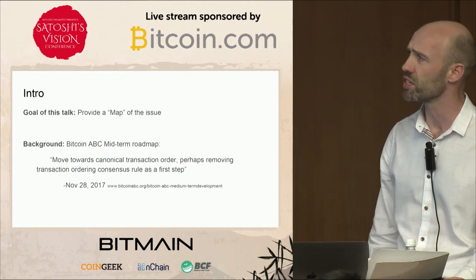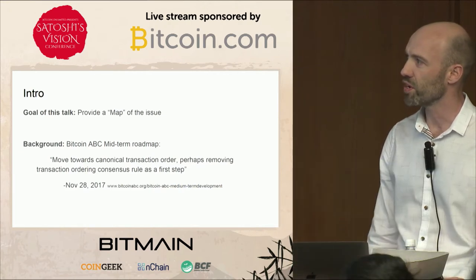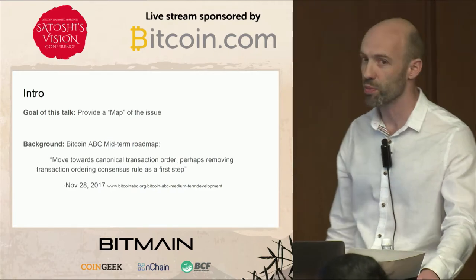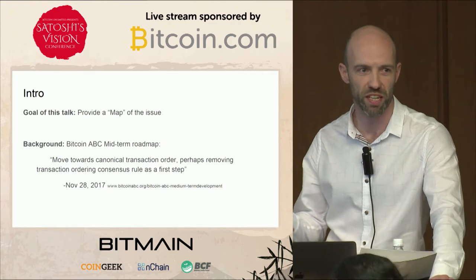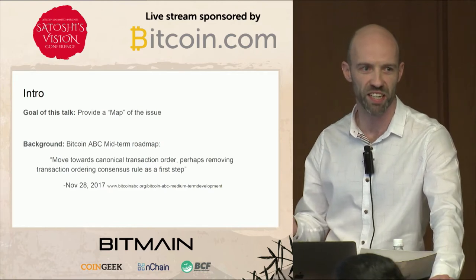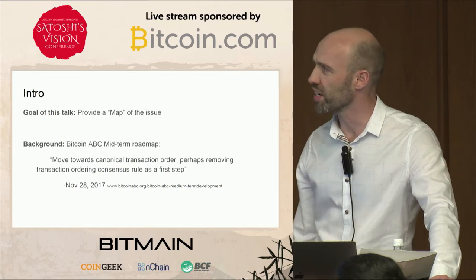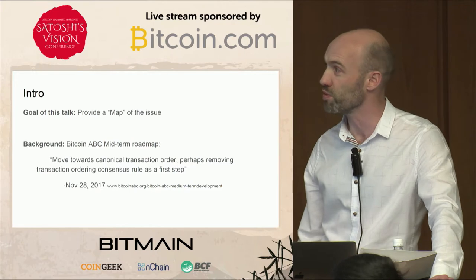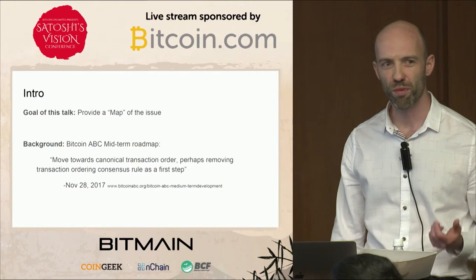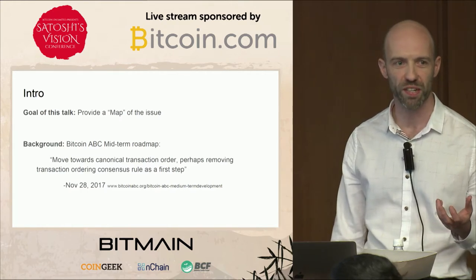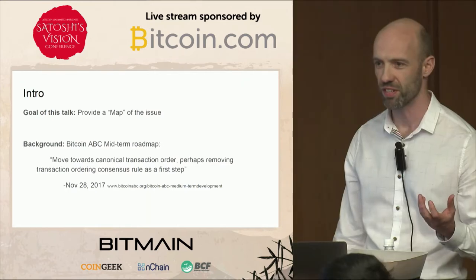The background context is that back in November when Bitcoin ABC and the various teams released their plans for the roadmap, there were things in there that everyone kind of seemed obvious — like let's raise the block size limit again and let's reactivate opcodes. But then there was this other thing written in there: let's move towards canonical transaction order, maybe removing the ordering current order rule as a first step. It seemed like a lot of people weren't really aware of this, like it just came out of left field.